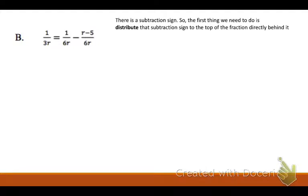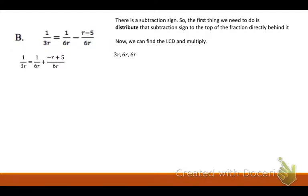Let's look at another one. I have 1 over 3r equals 1 over 6r minus (r minus 5) over 6r. The first thing I'm going to do is distribute the subtraction sign — we always do that with subtraction first. Distributing gives me negative r plus 5. Now finding the common denominator: I have 3r, 6r, and 6r. Can 3r go into 6r? It can. So 6r is our least common denominator. The restriction: 6r cannot equal 0, which means r cannot equal 0.